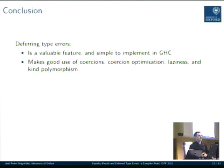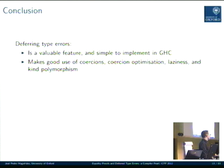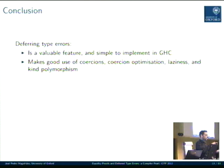To conclude, we think this is a valuable feature to have that can be put to good use. It's also an interesting, constructive story about how you can make use of all these features in GHC. One thing I haven't really shown is how we make use of kind polymorphism. It turns out we don't need just equalities between things like `Int` and `Char`, but we also need them at higher kinds, like `Maybe`, `Either`, `[]`, etc. We could have different equalities for different kinds, but since we have kind polymorphism, this equality type is just kind-polymorphic and will work for types of all kinds.